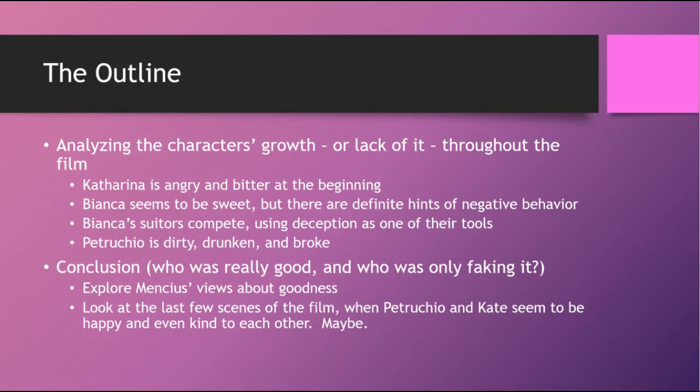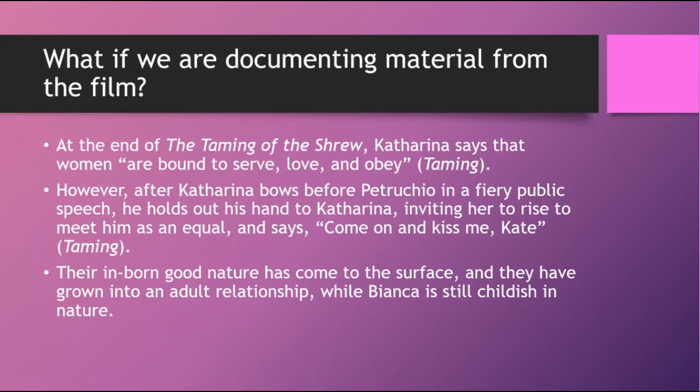The conclusion, after exploring all that growth or lack of it, is: who is really good and who was only faking it, or just thought they were good but really weren't? I might explore Mencius's views about goodness more, to justify using his material as a source and blend it in better. Then I would look at the last few scenes of the film when Petruchio and Kate seem to be happy and even kind to each other. The Taming of the Shrew is one of Shakespeare's problematic plays — some think it is tremendously sexist, while others see redemption, kindness, and respect at the end.